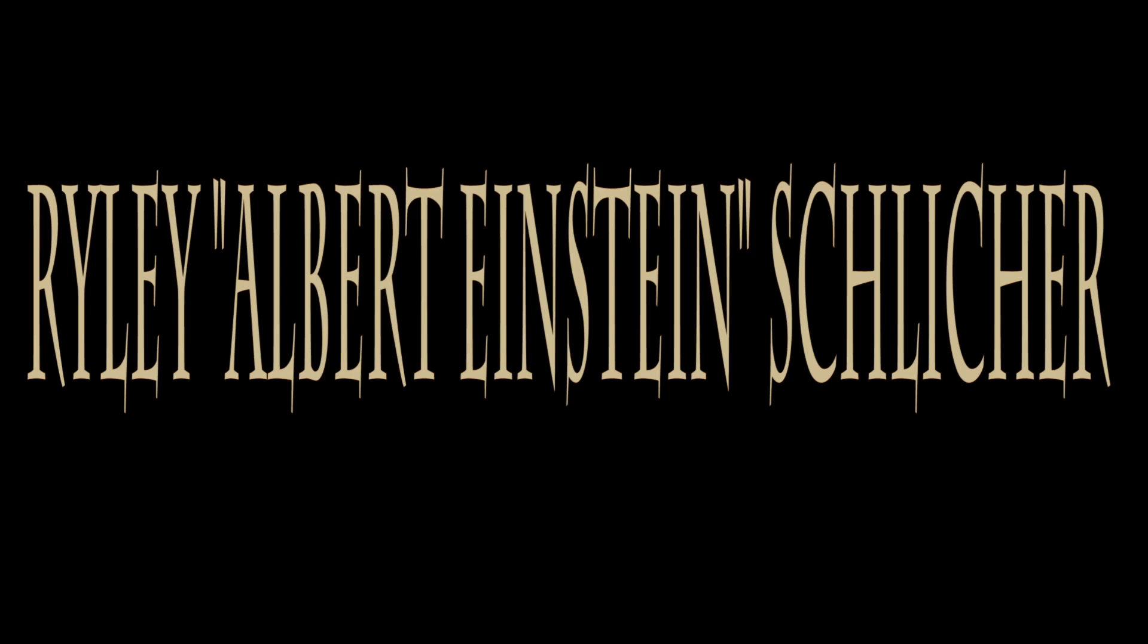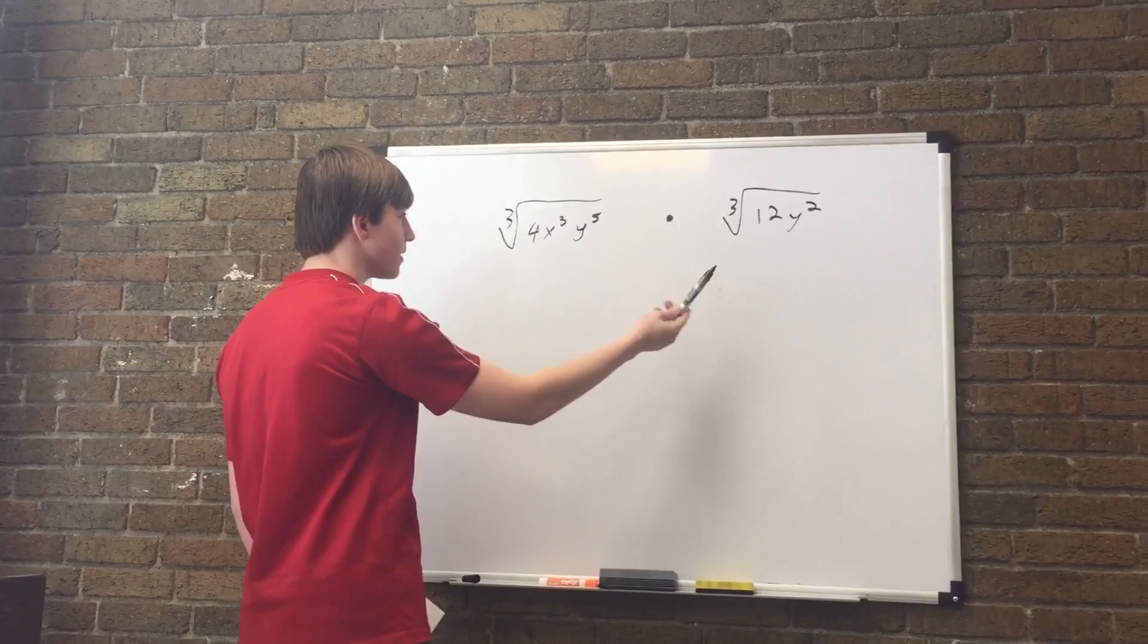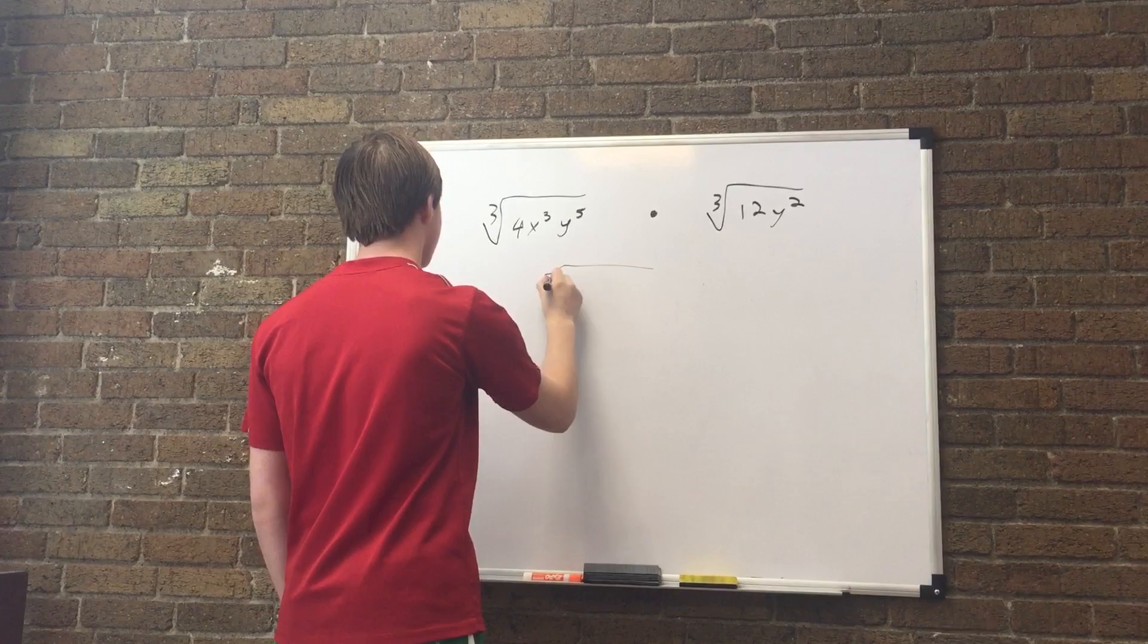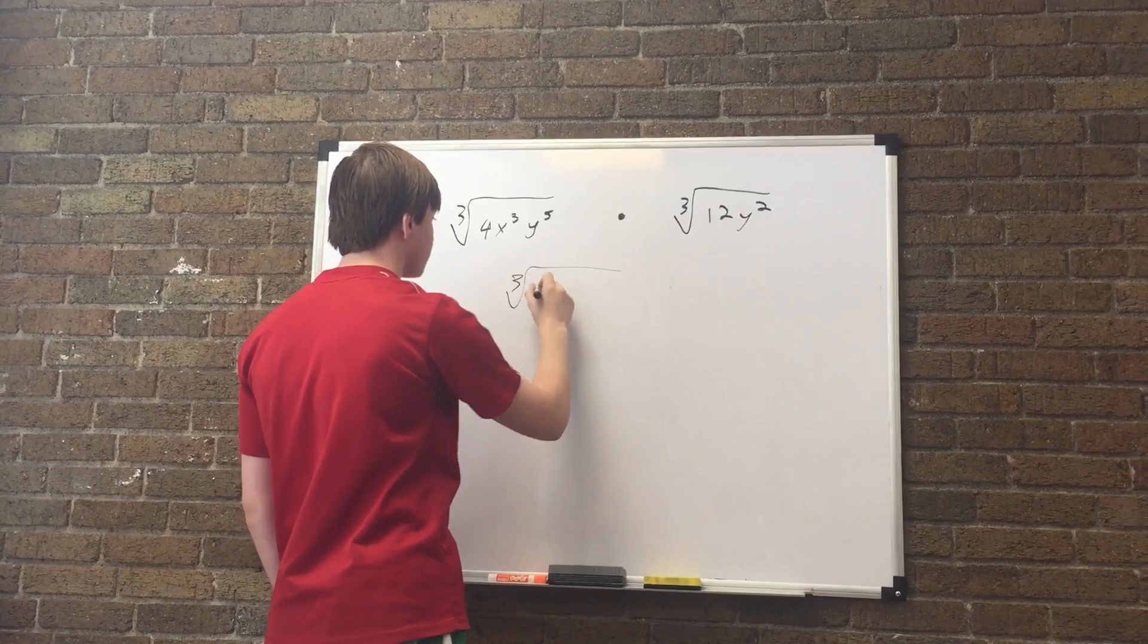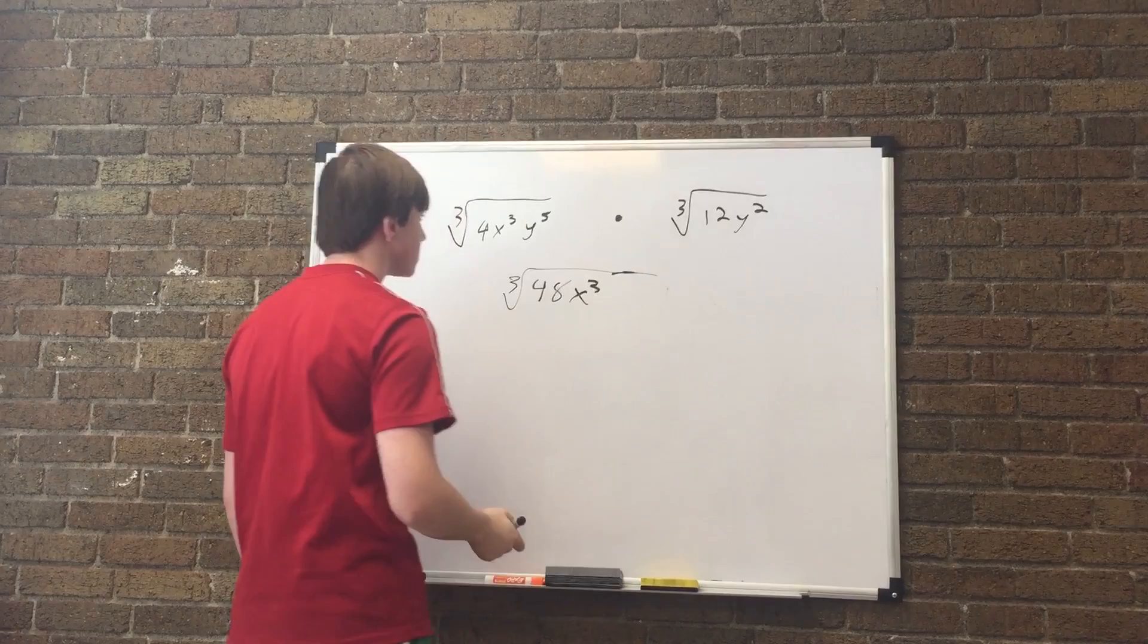So I have to simplify this problem right here. So what you have to do is multiply these two sides together. So you take the 3 squared, and that stays the same because you have the 2, 3 squared. And then you take the 4 and the 12, and you multiply them together. You get 48. And it stays x³ because you don't have anything to multiply with. And then y comes to y⁷ because you add the 5 and the 2 together.